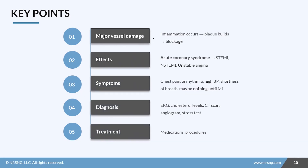Key points: Coronary artery disease causes major vessel damage — inflammation occurs, plaque builds up, and it leads to a blockage. Effects include acute coronary syndromes such as STEMI, NSTEMI, and unstable angina. Symptoms may include no symptoms at all until a heart attack, or chest pain, arrhythmia, high blood pressure, and shortness of breath. Diagnosis may involve an EKG, cholesterol levels, CT scan, angiogram, or stress test. Treatments include medications such as statins or vasodilators, and procedures such as angioplasty or coronary artery bypass surgery.